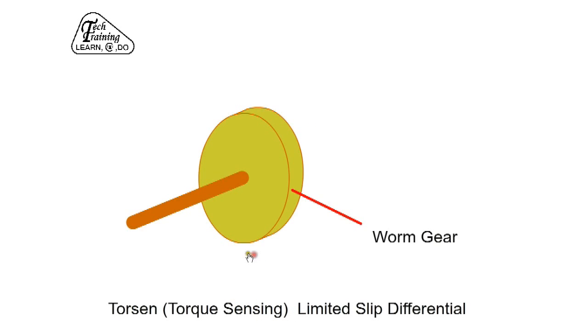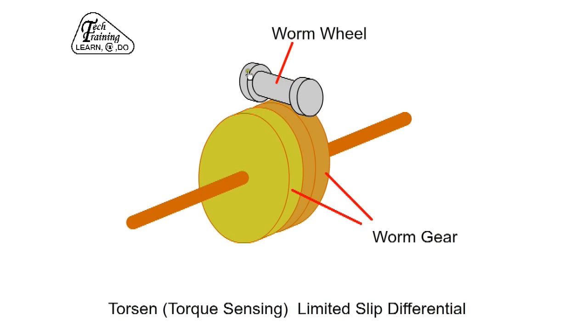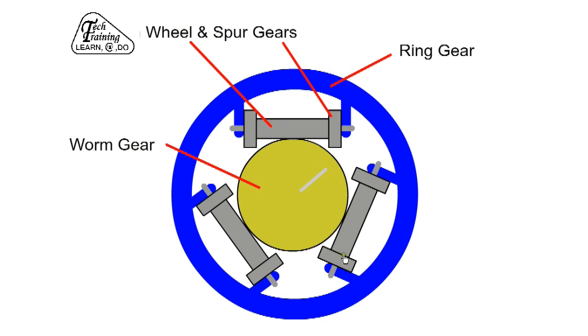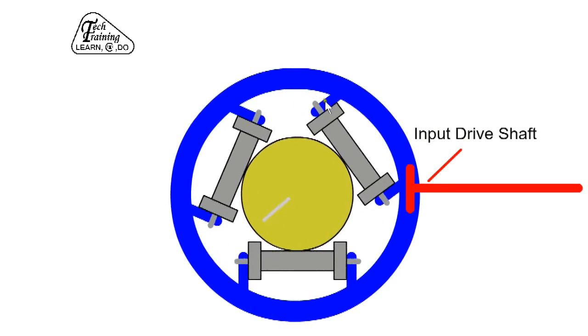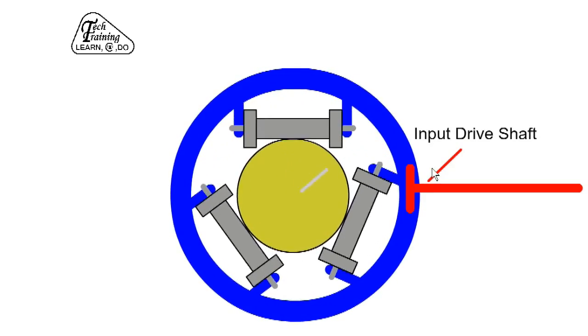The torsen consists of a worm gear attached to the half shaft. This gear is meshed with a worm wheel that has spur gears at the ends. Here we show one set of worm wheels, but in practice there are a total of three. When travelling in a straight line, the crown gear rotates and drives both half shafts at the same speed via the worms.